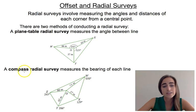The second way of doing things is called a compass radial survey. And it measures the bearing of each line. So if we start in the middle of the field again, this line up here, this corner is on a bearing of 50 degrees. This corner down here is on a bearing of 129 degrees, 206 and 263. So they give the same information, just in two different ways.